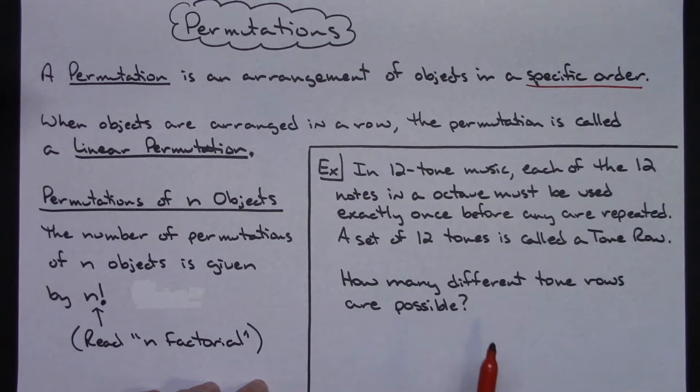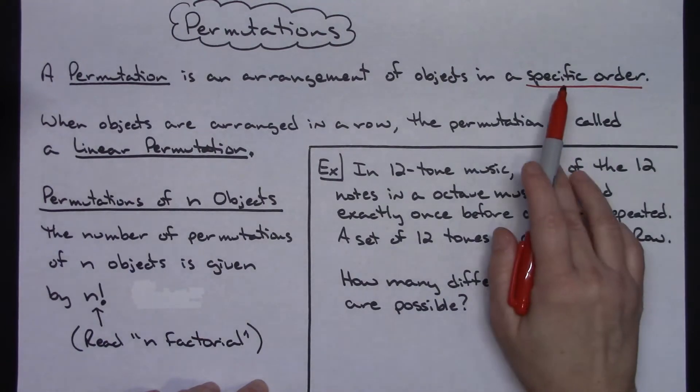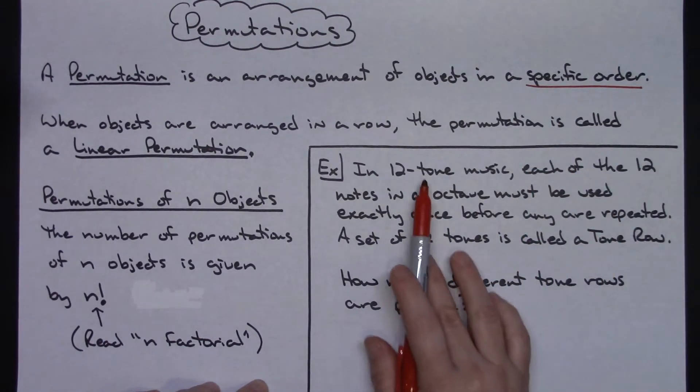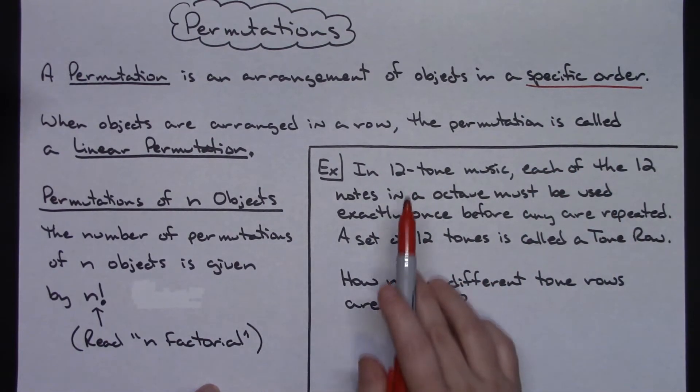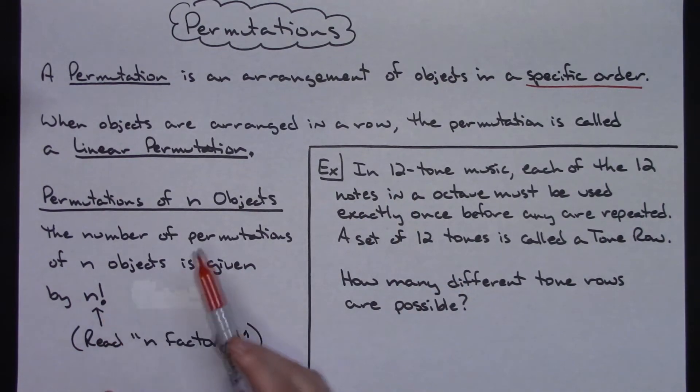This is a permutation question. Things have to be in a specific order. I have exactly 12 to choose from, so I would answer this by doing 12 factorial.